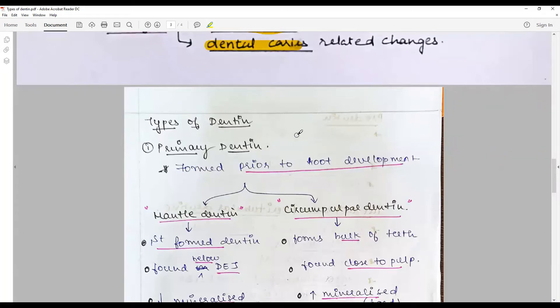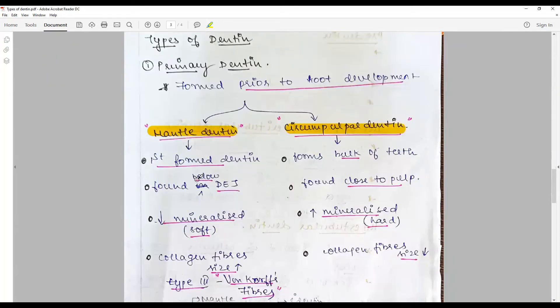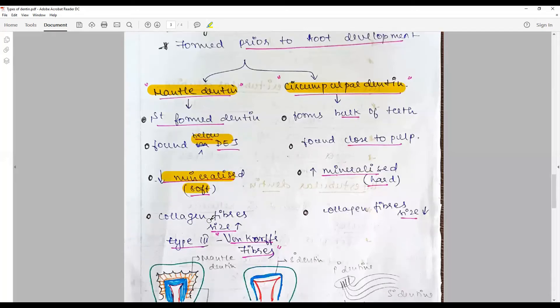You'll go about the primary dentin formed before the root completion: mantle dentin, circumpulpal dentin. First formed dentin immediately below the DEJ, less mineralized as compared to the circumpulpal dentin, and we have type 3 collagen fibers called Korff fibers. Circumpulpal dentin forms the bulk of the tooth, very close to the pulp and increasingly mineralized by at least 5 percentage, but it has a low collagen size.